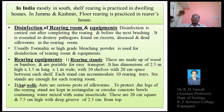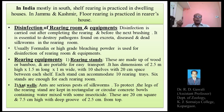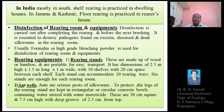In the 2.5-meter height of the rearing stand there are 10 shelves, each with a 20-centimeter space where rearing trays are kept for feeding silkworms. Each stand can accommodate 10 rearing trays, and 6 stands are sufficient for a single rearing room.